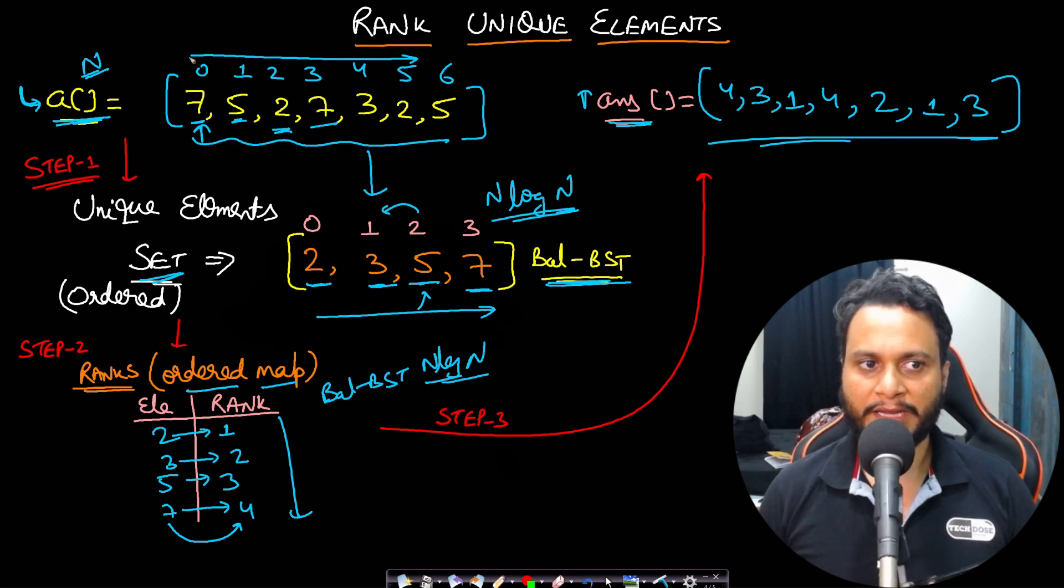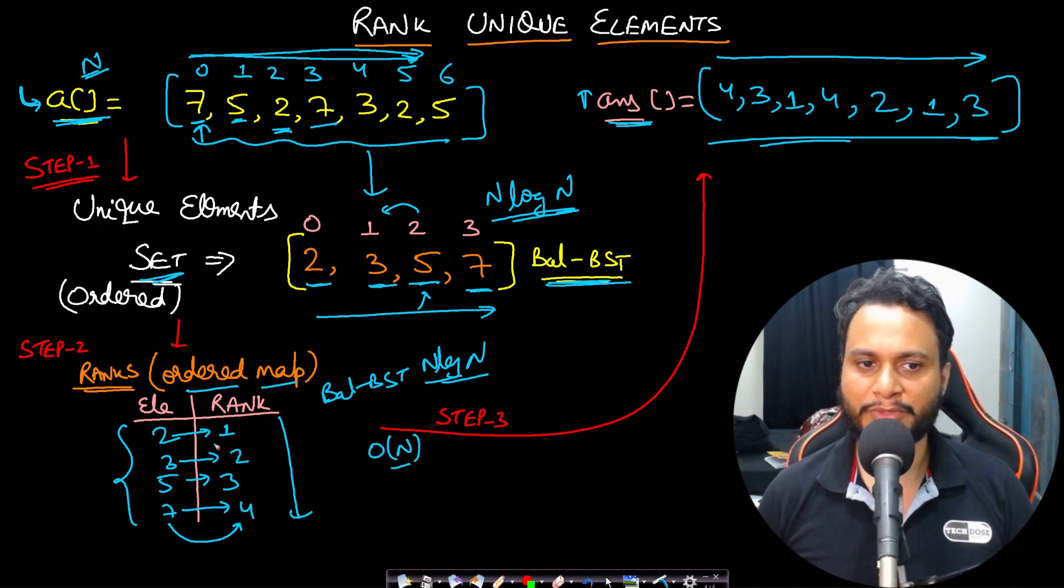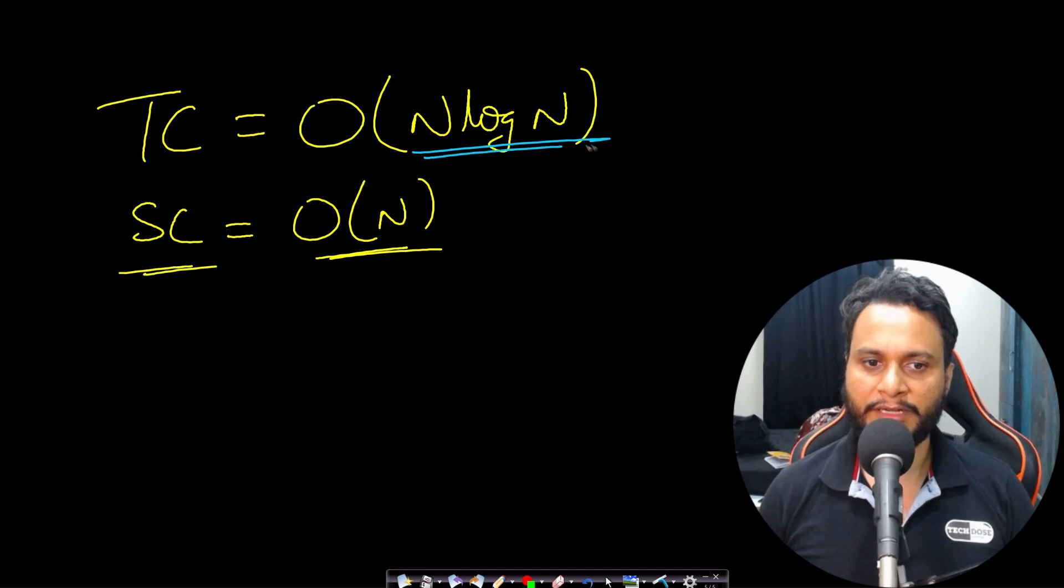And after this, we are iterating through all the array items one by one and we are doing a lookup on the map to find out the rank associated with each item and building our answer and returning it. So this step can be considered as order of N considering the lookup on the map is order of one. So if you add up all these time complexities, the time complexity will be N log N.